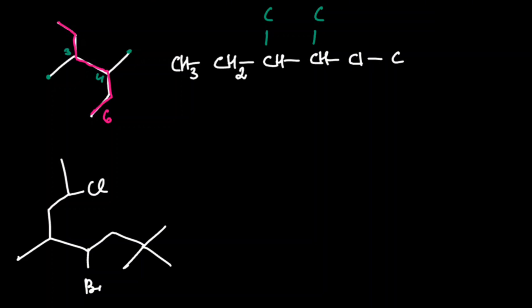The fifth and sixth carbons have two and one bond, so we add two and three hydrogens respectively. Since each substituent is a carbon with one bond, we add three hydrogen atoms to each.